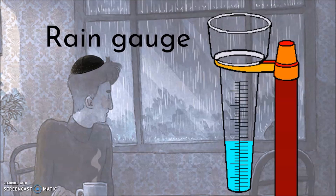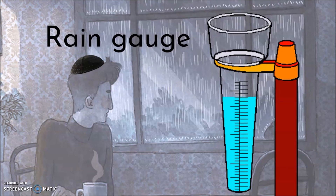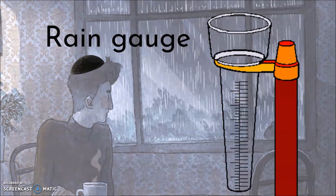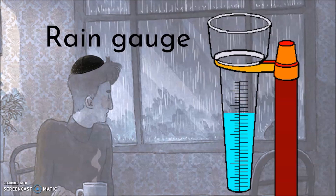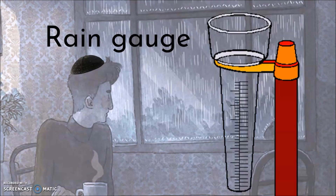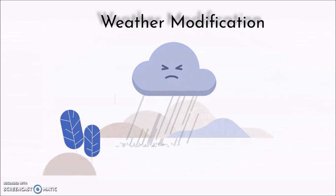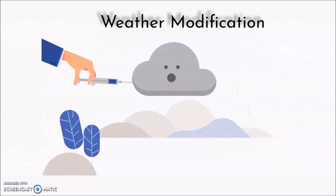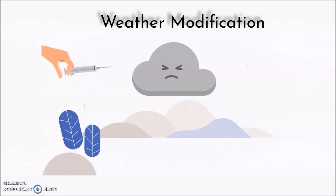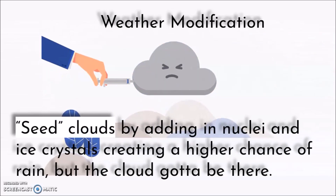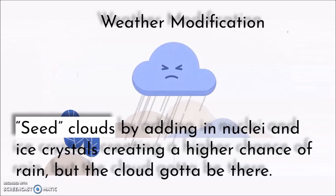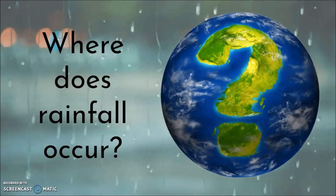Rainfall is measured by an instrument called a rain gauge. It measures what the depth of the water would be if the water did not soak into the ground, flow away, or evaporate. Scientists have also learned to do weather modification — changing the weather. For example, fog needs to be removed from airports, or certain areas need rain. A way they do that is through seeding, which means adding nuclei and ice crystals to create more chance of rain, assuming the cloud is already there.